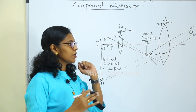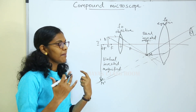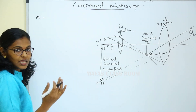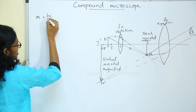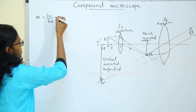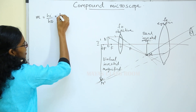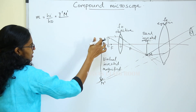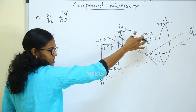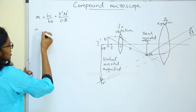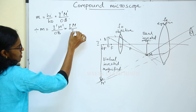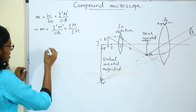Now we will see magnification. Magnification is the ratio of the height of the image to the height of the object. The equation is: magnification M equals height of image divided by height of object.